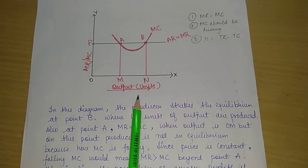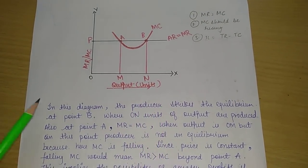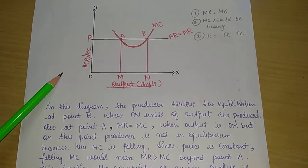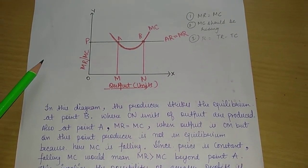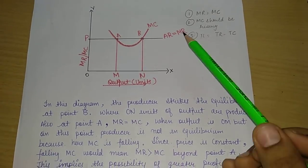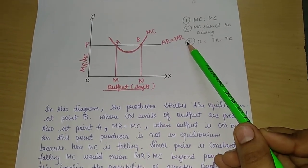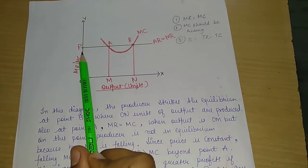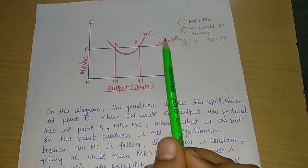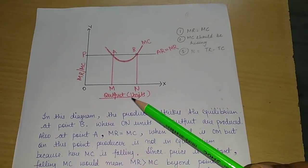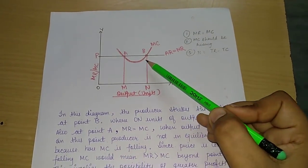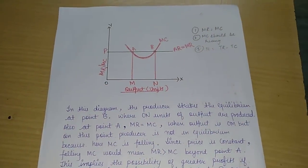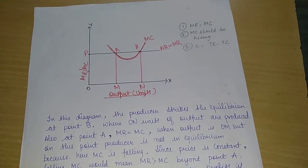In the diagram, the x-axis shows Output and the y-axis shows MR and MC. We know that AR and MR are constant, shown as a horizontal line. Then MC will be U-shaped, falling and then rising.